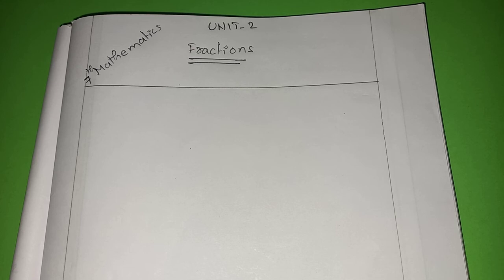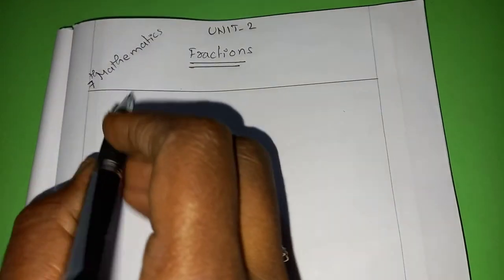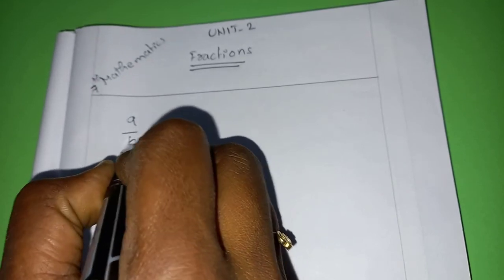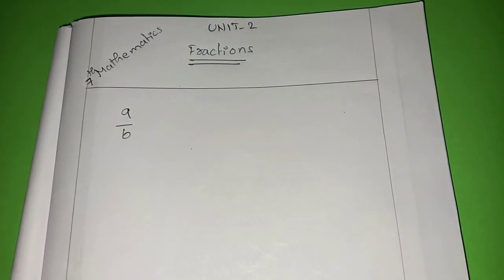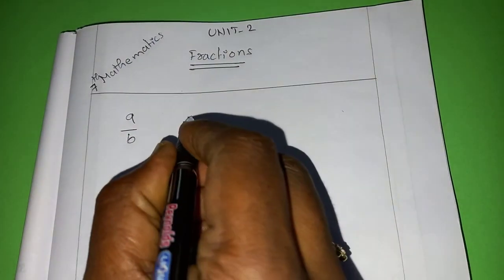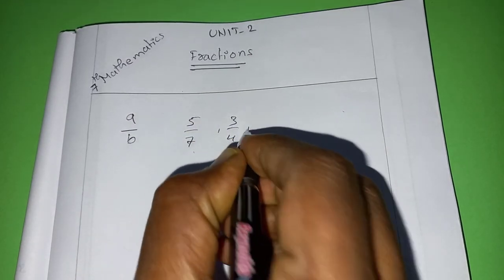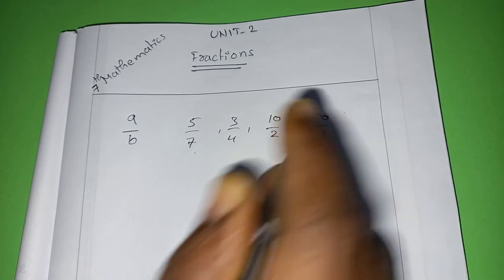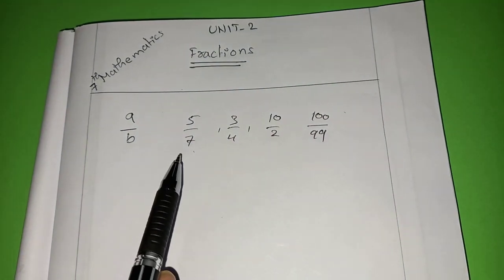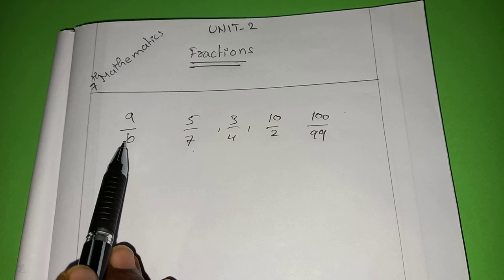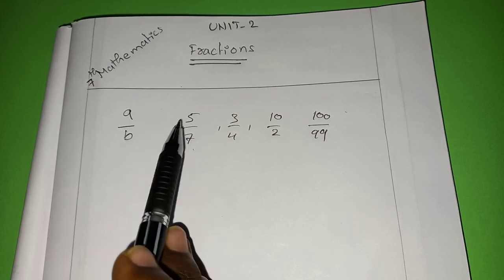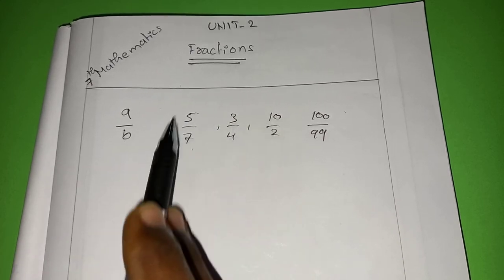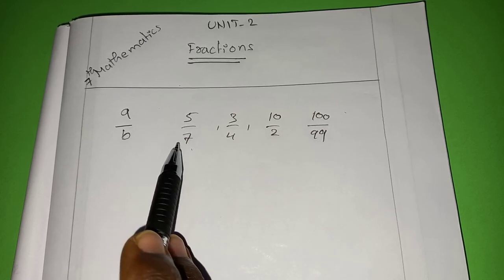Hi friends, now you are watching 7th class mathematics 2nd unit fractions. What is a fraction? A number which is in the form of A by B is called a fraction. Any number like 5 by 7, 3 by 4, 10 by 2, or 100 by 99 is a fraction. If the number is in this form, we call it a fraction.